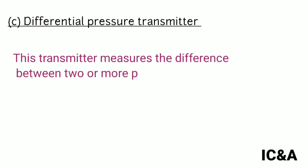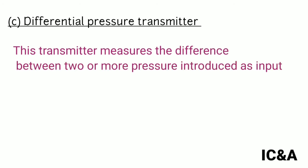Differential pressure transmitter. This transmitter measures the difference between two or more pressures introduced as input to the sensor or the sensing element.